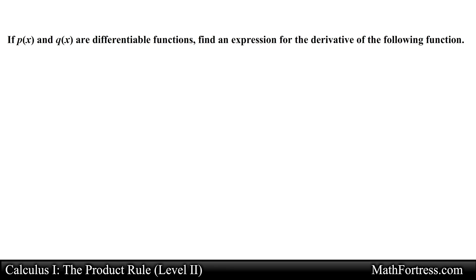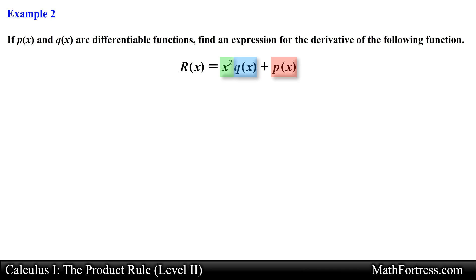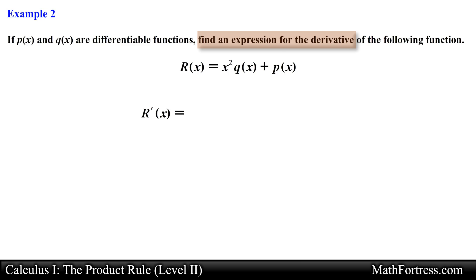Let's try another example. If p and q are differentiable functions, find an expression for the derivative of the following function: r equals x squared times q plus p. Notice that we now have a function r defined by a power function along with the functions q and p. Similar to the previous example we are asked to find an expression for the derivative. So we go ahead and take the derivative of this function term by term. For the first term we have a product of two functions, in this case x squared and q, so we need to apply the product rule.